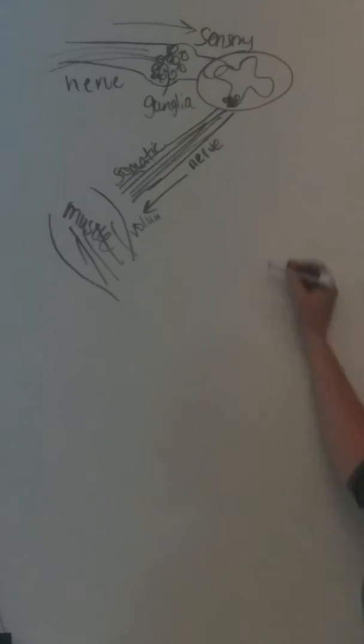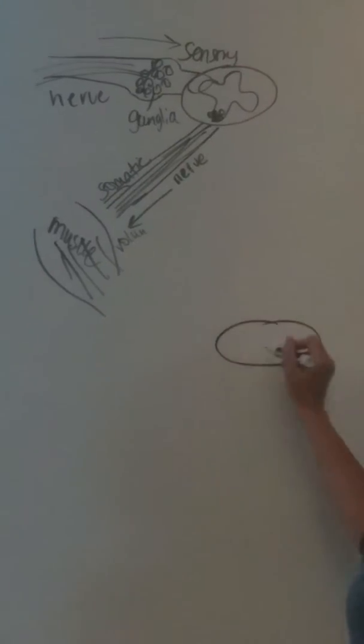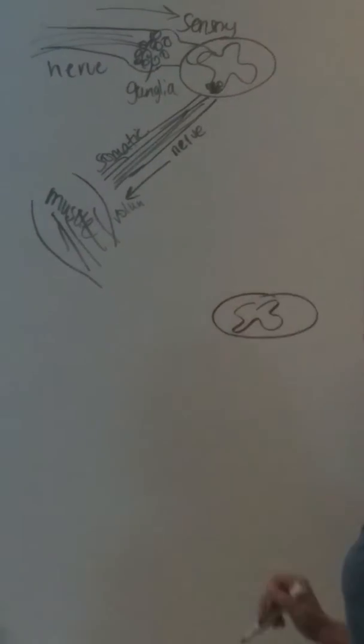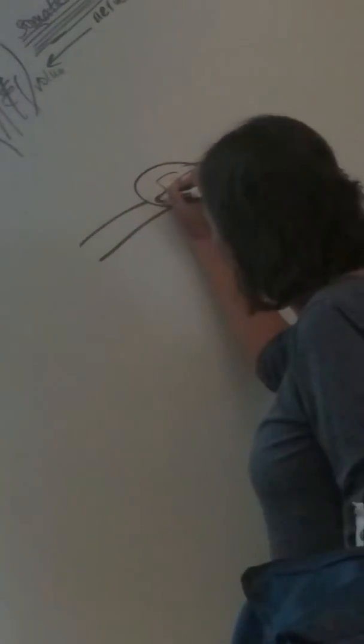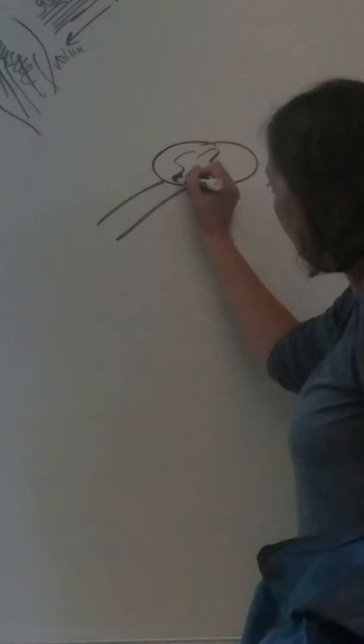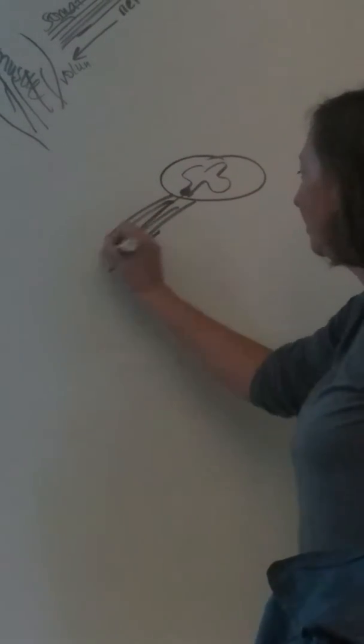So now let's make another slice of the spinal cord. Again, we're just going to look at motor responses. So we have one here. Here's our cell bodies. Here are our axons.